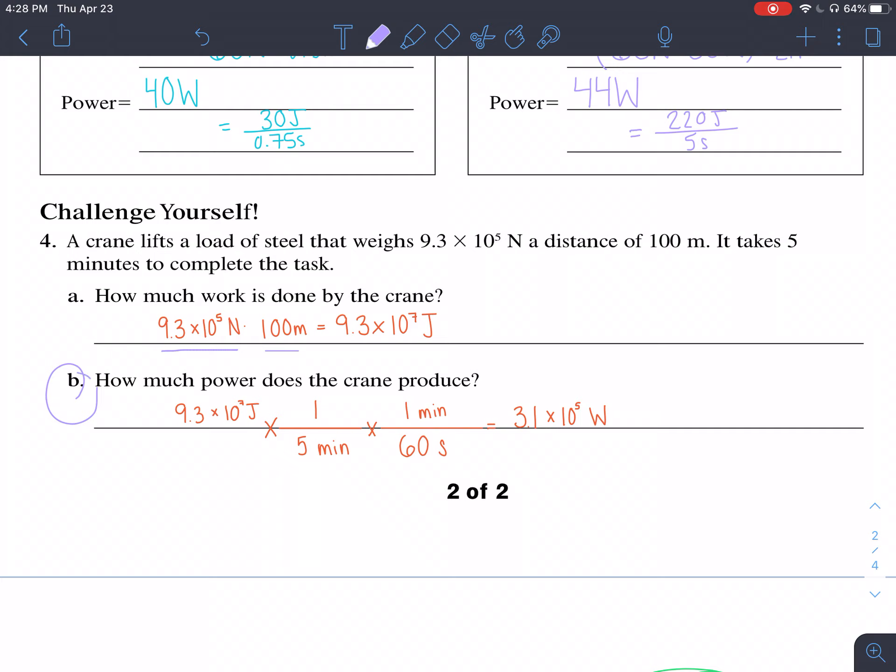B had a little bit more to it because you were given five minutes. So you had to convert minutes into seconds to be able to end with watts. Thank you for watching.